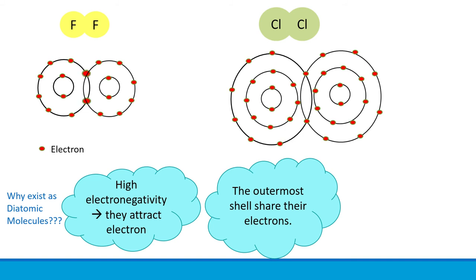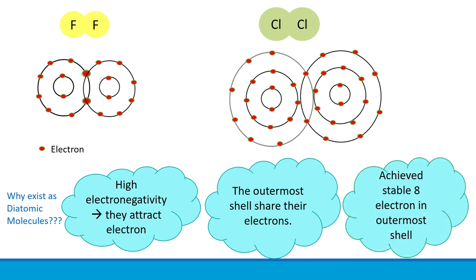Now both the identical atoms have eight valence electrons in outermost shell, achieving a complete shell electron arrangement.